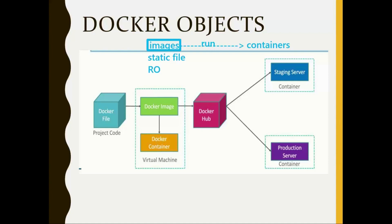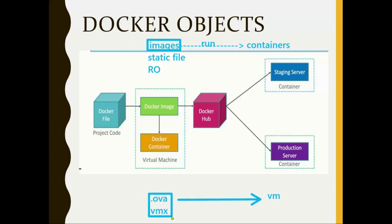If any of you have worked with virtual machines, you can understand this analogy. When you create a virtual machine it can be saved as an OVF file or a VMX file — it's a static file. When you run this file you get a VM. They don't share the running VM; they share these files. Whoever needs it will run it and create a VM. Same analogy applies here — a Docker image is that static file; you run it and get a container.